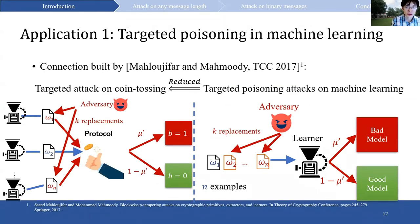Interestingly, previous work has built a connection between targeted attacks on coin tossing protocols and targeted poisoning attacks on machine learning models. The left figure shows the attack on coin tossing, and the right figure is the analogous learning problem: a machine learner takes a dataset of n examples as input and returns a model, while an adversary inspects and modifies some examples to make the learner produce a bad model. We can reduce this by defining a collective coin tossing protocol based on the learner, letting b equal 1 if the learner outputs a bad model. Our attack on coin tossing with any budget can then translate directly to targeted poisoning attacks on machine learning models of the same budget.